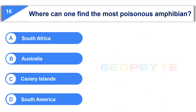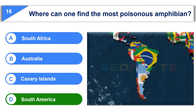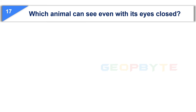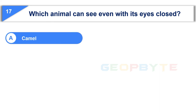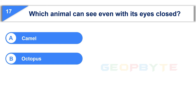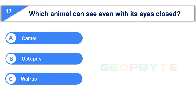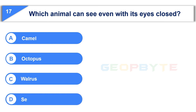Your time is up and the correct answer is Option D: South America. The 17th question: which animal can see even with its eyes closed? Option A: Camel. Option B: Octopus. Option C: Walrus. Option D: Sea Lion. Your time starts now.